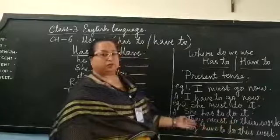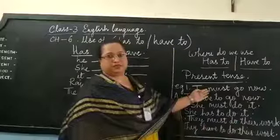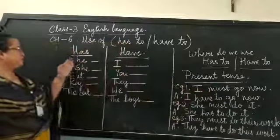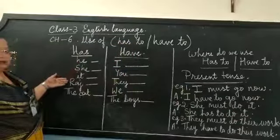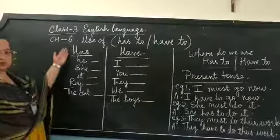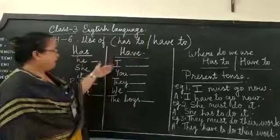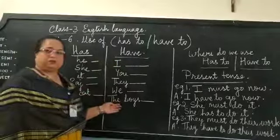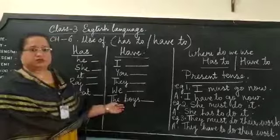So where did we use have to and has to? After removing the word must, in their place. Has to was used with he, she, it, Raj, or any other kind of singular subject. And have was used with I, you, they, we, or any other kind of plural subject. I hope you have understood this chapter.